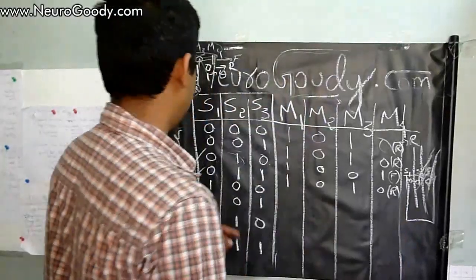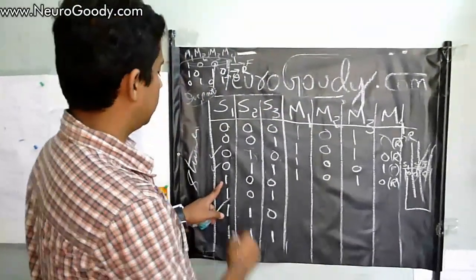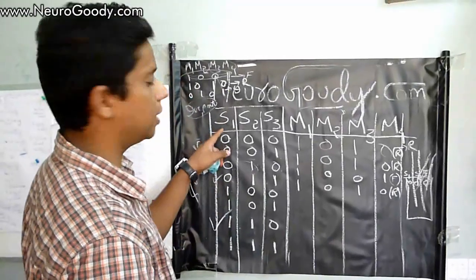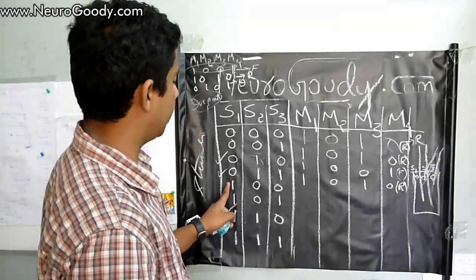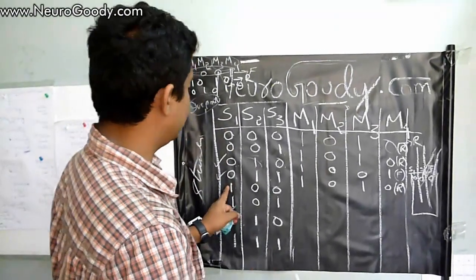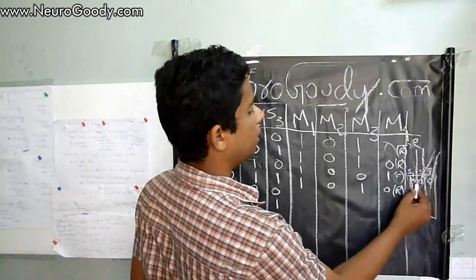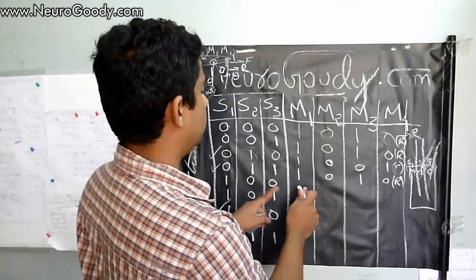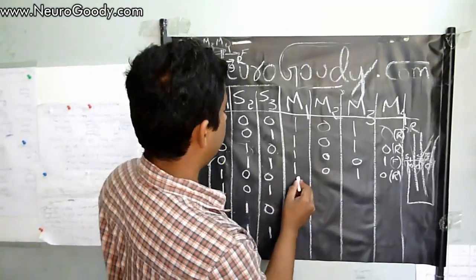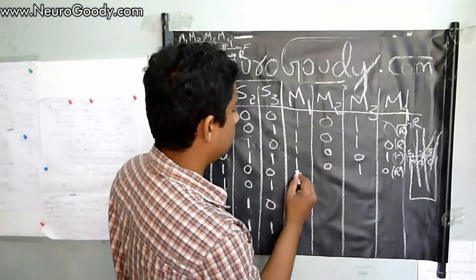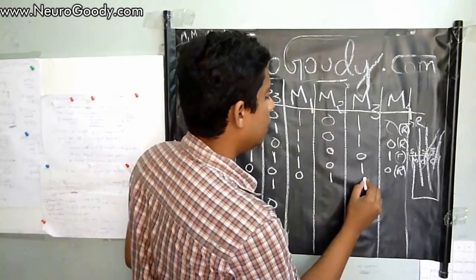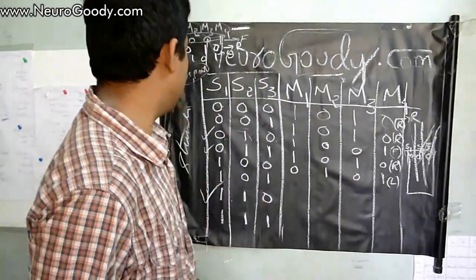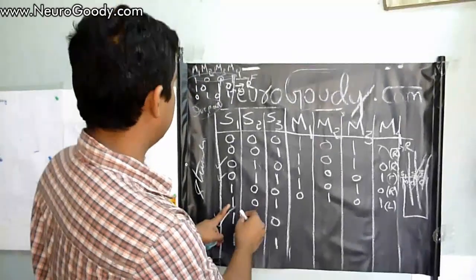Now coming to the fifth condition 100: this means that sensor S1 is on the black line, so the robot should actually take a left turn. I will be writing the left condition for the motor outputs here. The left condition I have assumed is 0101.